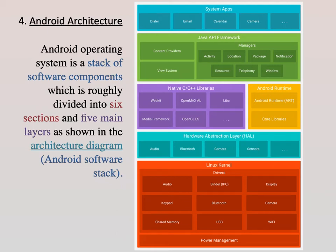In this session we are discussing about Android architecture, also known as the Android software stack. The Android operating system is a stack of software components roughly divided into six sections and five main layers, as shown in the architecture diagram.